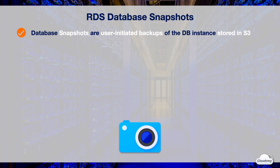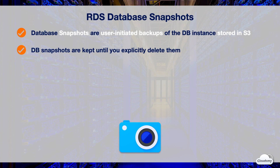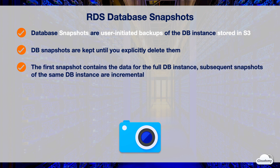Database snapshots are user-initiated backups of the DB instance stored in S3. Database snapshots are kept until you explicitly delete them. Unlike automated backups, manual snapshots are not subject to the backup retention period, as they never expire. The first snapshot of a DB instance contains the data for the full DB instance. Subsequent snapshots of the same DB instance are incremental, meaning RDS only saves changes made after the most recent snapshot.